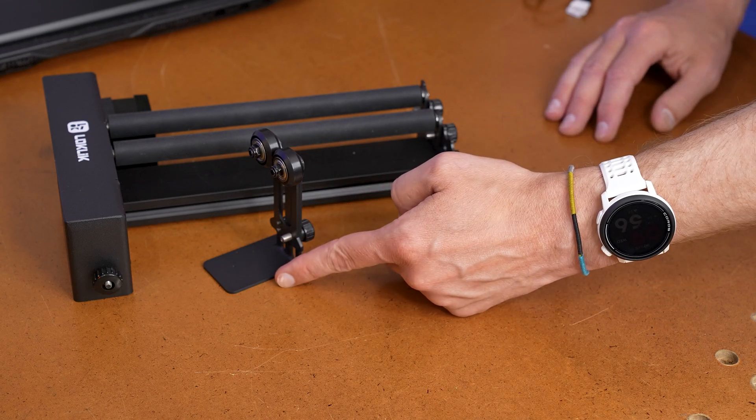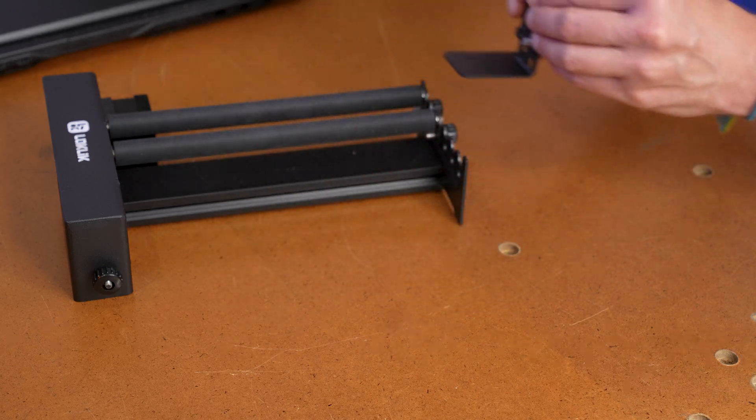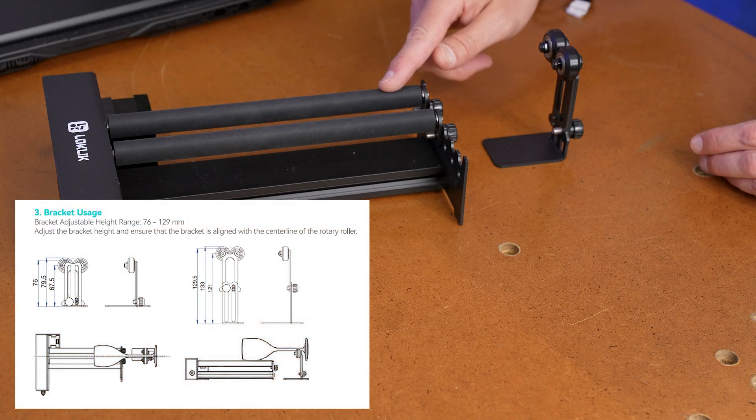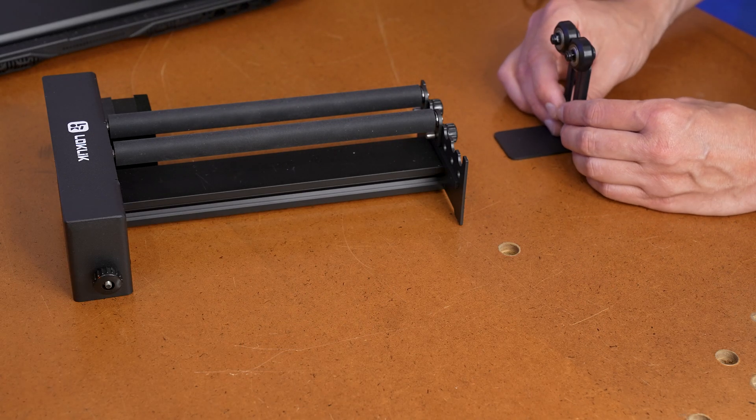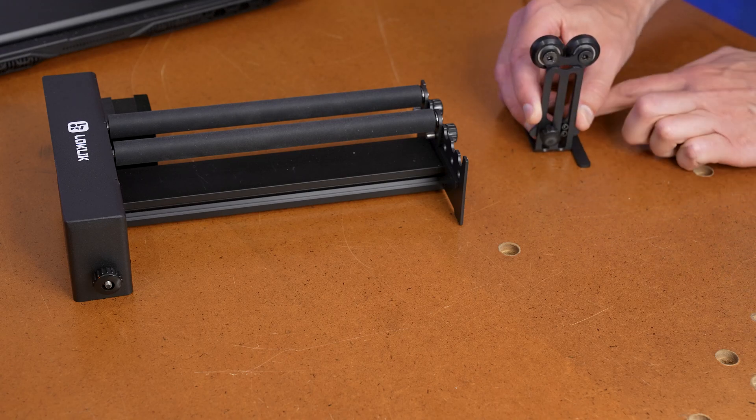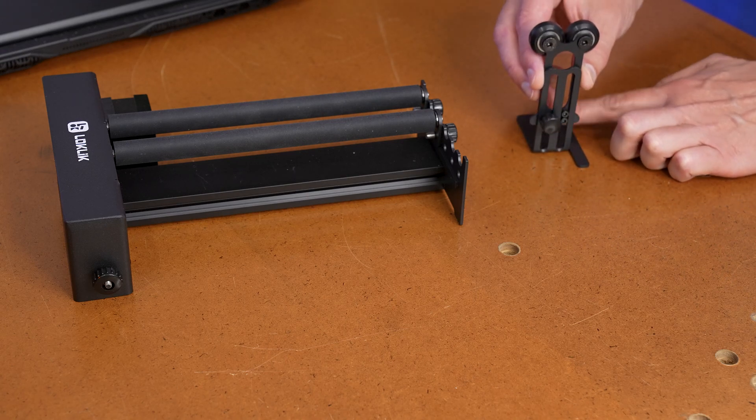There's also this auxiliary wheel set that is placed typically over in this area for objects that hang off the end of the rotary roller. This wheel set is going to help support that, and with the thumbscrew on the end here, it is adjustable up and down.